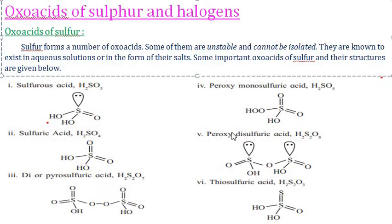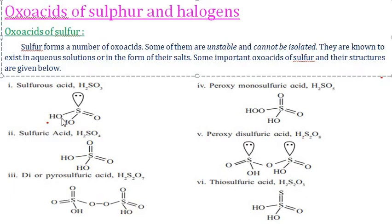There are six types of oxoacids of sulfur: sulfurous acid (H2SO3), sulfuric acid (H2SO4), peroxy monosulfuric acid (H2SO5), peroxydisulfuric acid (H2S2O8), and thiosulfuric acid (H2S2O3). The structures and molecular formulas of these acids are commonly asked in examinations for one or two marks.